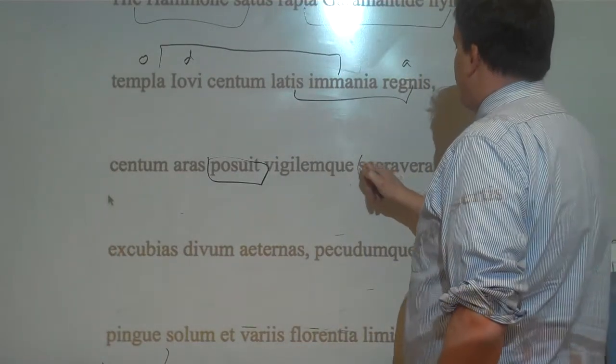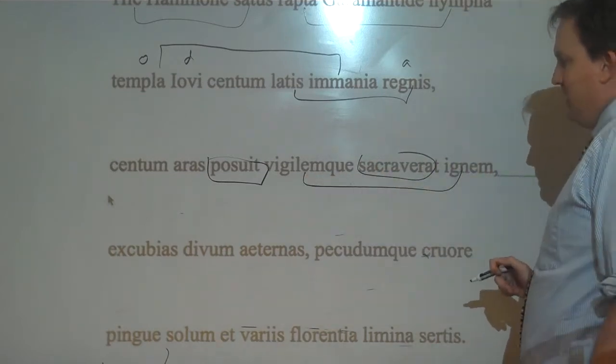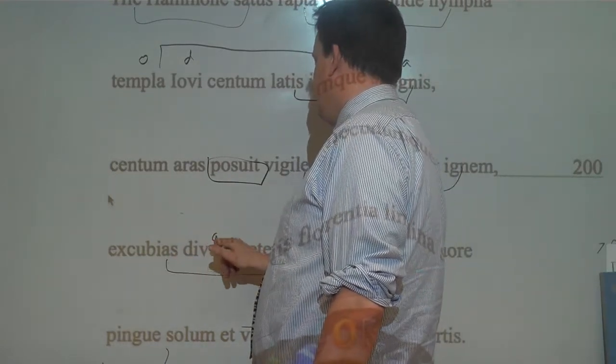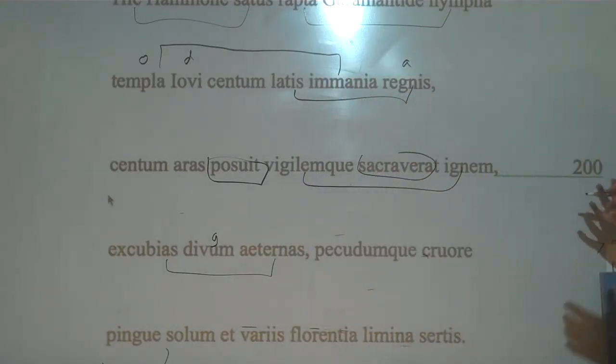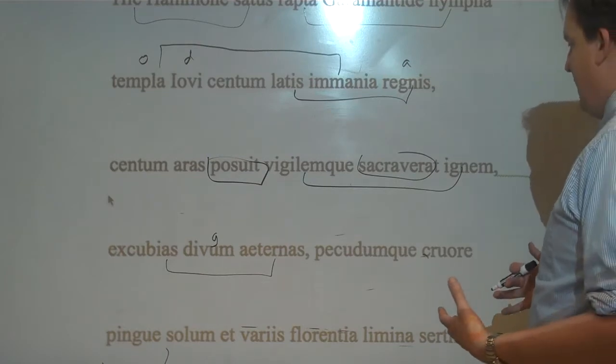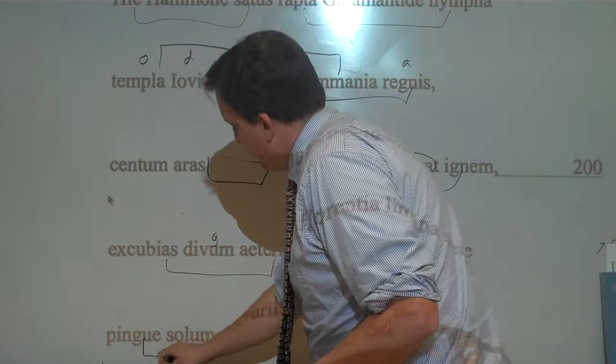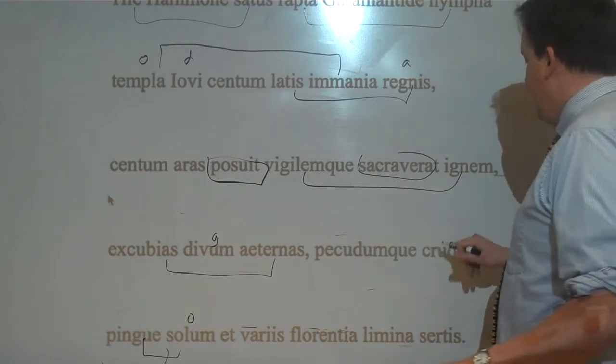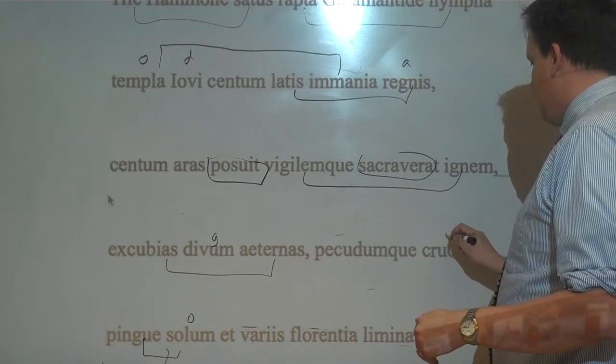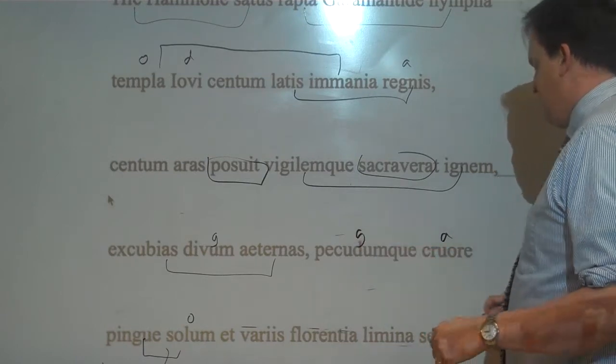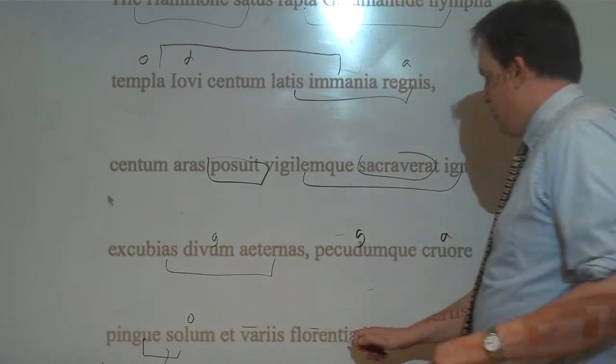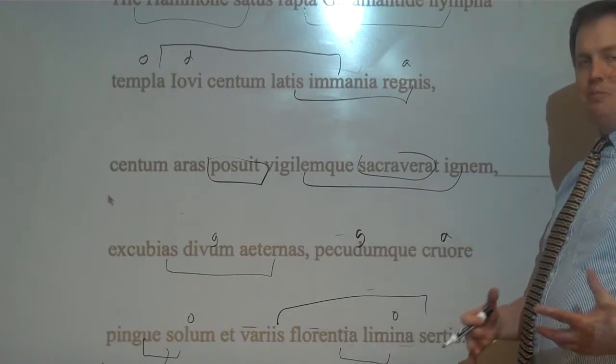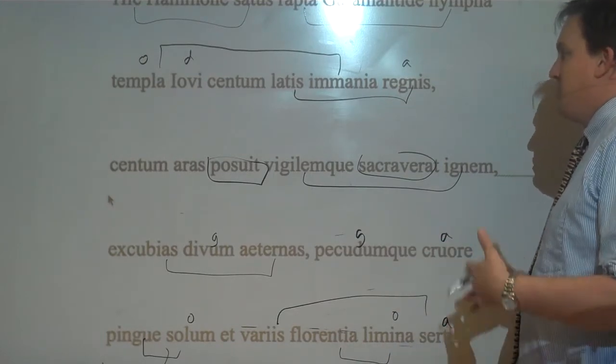And he consecrated a sacred fire. And he consecrated the eternal feasts, or couches, of the gods. So they have couches, temples. He's done all these great things for Jupiter. And he also consecrated the rich earth. Penguin A is third declension adjective, ends in an E, it's accusative. And he did that. He consecrated the rich earth with the blood of the flocks. And he consecrated the flowery thresholds with various reefs. So he's decorated, he's built these temples, he's built all these altars, and he keeps them together. So he's done all these things.